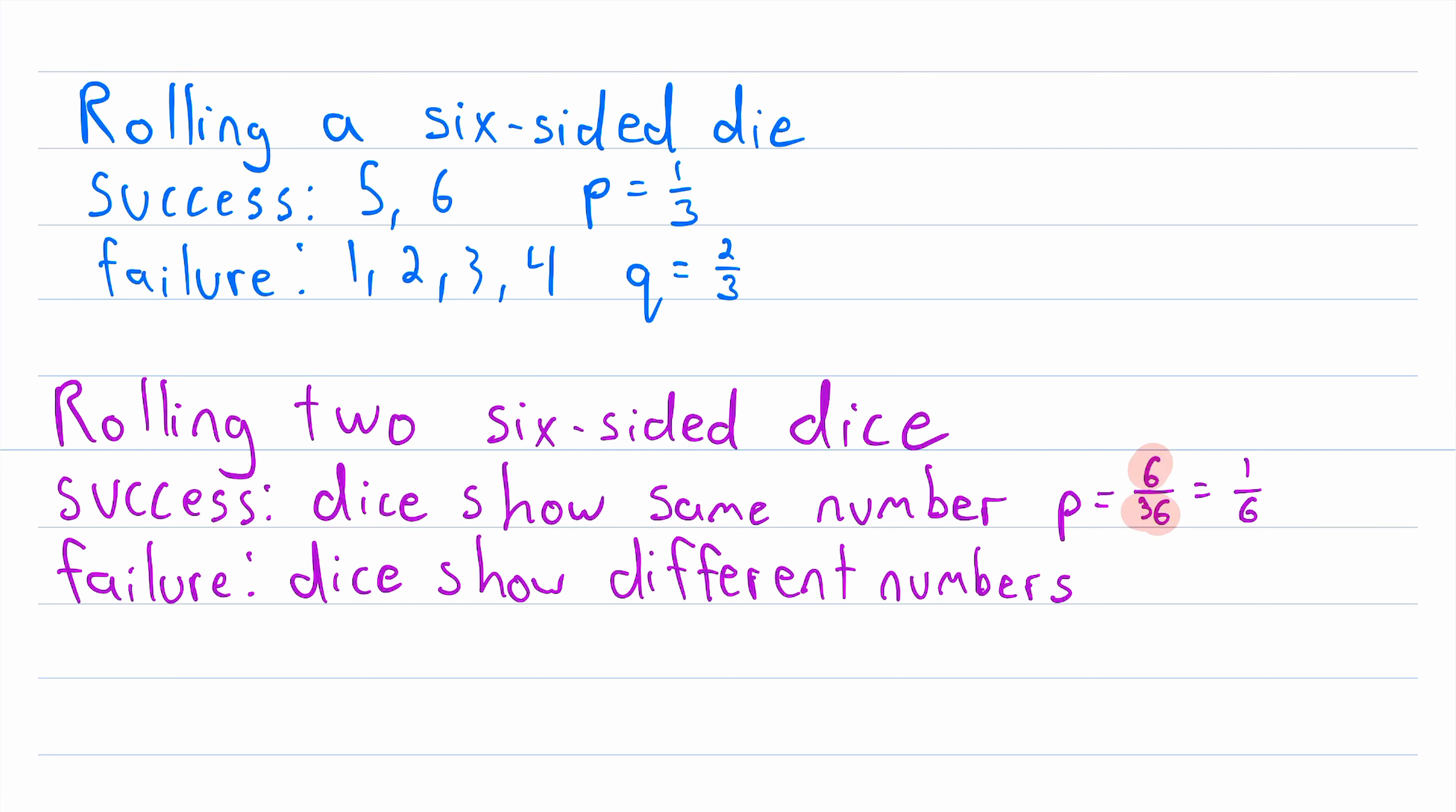So again, this six divided by 36 is the total number of ways we can get a success divided by the total number of ways that we can roll two dice. Then we know that the probability of failure, q, has to account for the rest of the probability, which means that q has to be equal to 30 divided by 36. Because remember that p and q have to add up to one. And this 30 over 36, if we wanted to, we could write as five sixths. So that's just another great example of a Bernoulli trial.